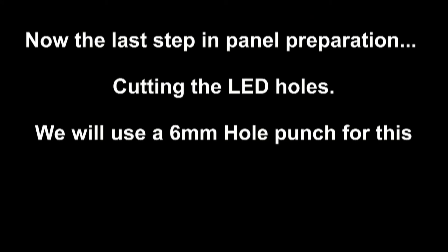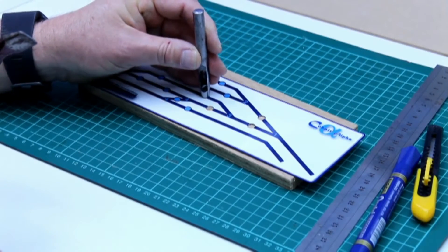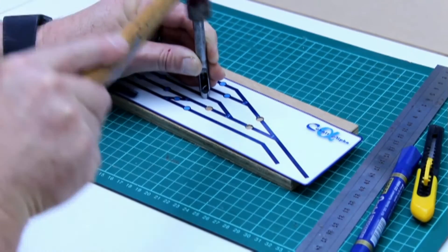Now we cut the holes using a 6mm hole punch. These are available at most big hardware stores and create a much better result than drilling.